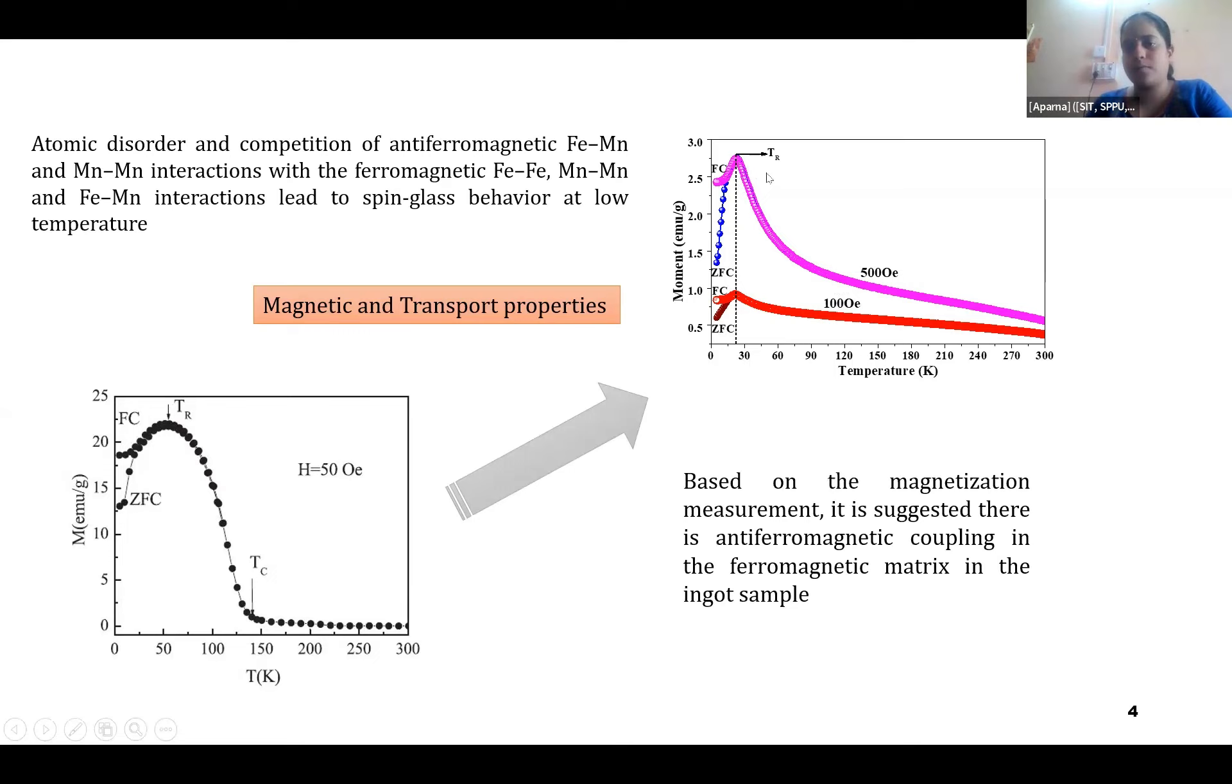So that is why we have enunciated that there is an existence of anti-ferromagnetic to ferromagnetic nature in this material. It can be due to the atomic disorder, and there is a combination of anti-ferromagnetic Fe-Mn and Mn-Mn interactions with the ferromagnetic Fe-Fe, Mn-Mn, and Fe-Mn interaction, which leads to the spin glass behavior at low temperature.